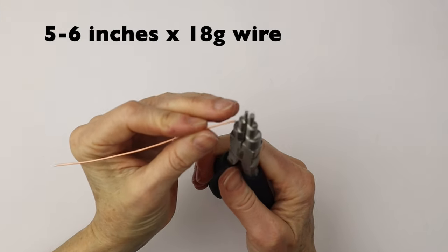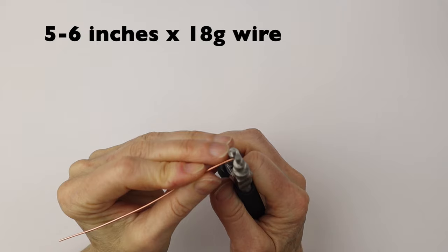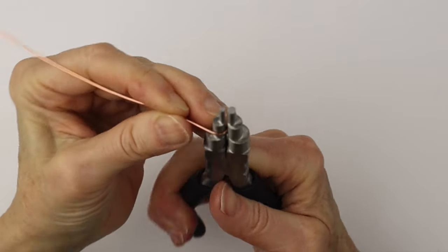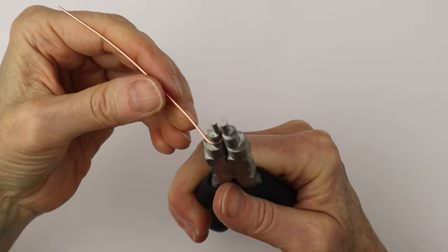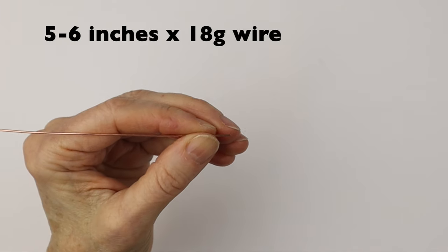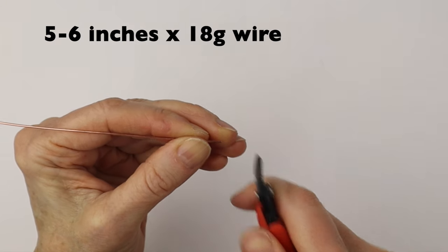For the second one we're going to take a longer piece of the 18 gauge wire, about five or six inches. We are going to start by doing the loop, then we're going to get another longer piece and we're going to make the hook.